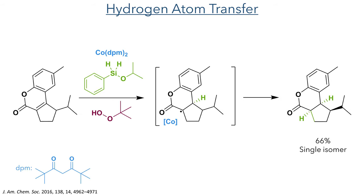At this point of the synthesis, the authors needed to reduce the carbon-carbon bond of the enone. They screened many methods and arrived at a hydrogen atom transfer method, which provided the greatest stereoselectivity. This method uses a cobalt-dipivaloylmethane complex, a silane which acts as the hydride donor, and tert-butyl peroxide which is necessary to generate the active catalyst. This transfers a hydride from the silane first to the beta position of the enone, and then forms a radical pair with the radical residing on the alpha position. Further reaction transfers a hydrogen atom to the same face of the molecule, and allowed the researchers to isolate a single isomer in a 66% yield.